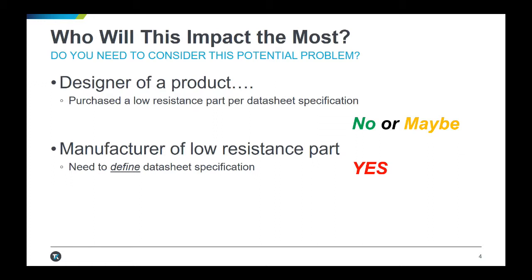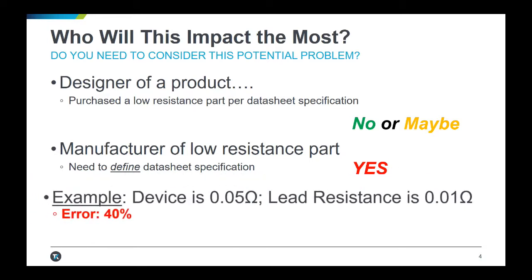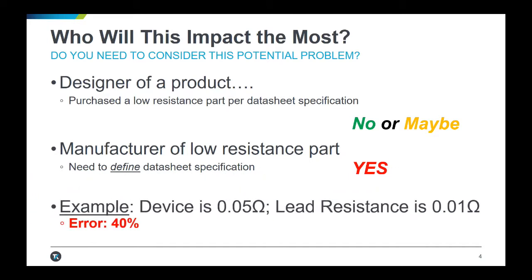Consider the situation where you are making 50 milliohm resistors and your test setup uses leads that are 10 milliohms each. This has the potential to result in 40 percent error in what you are measuring.